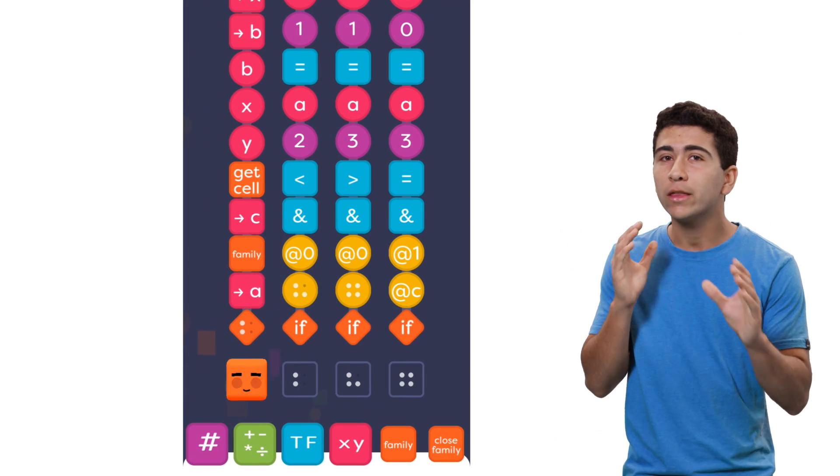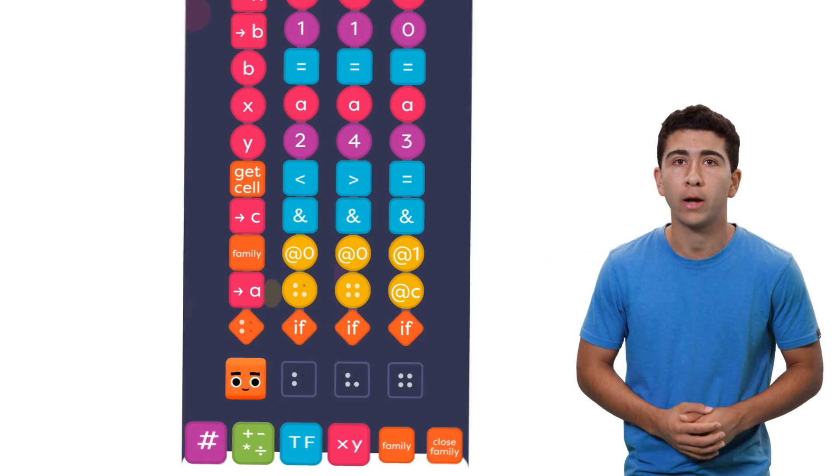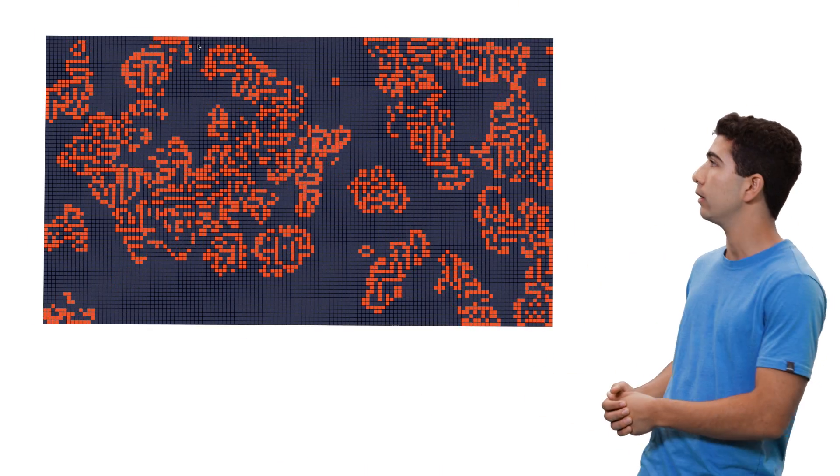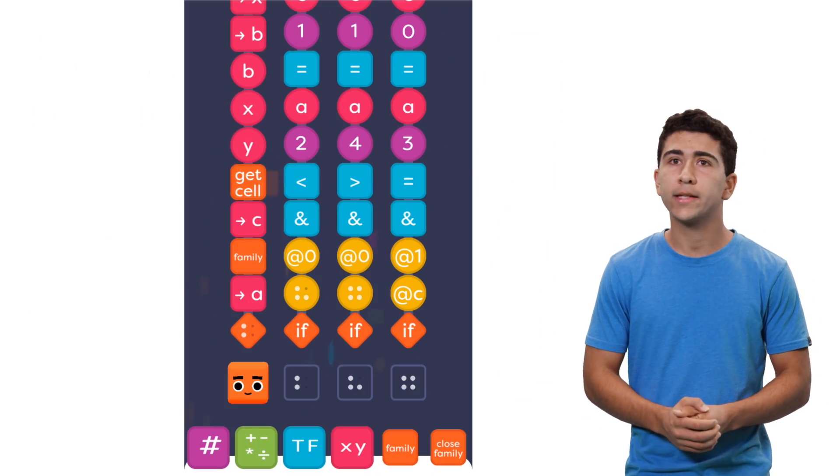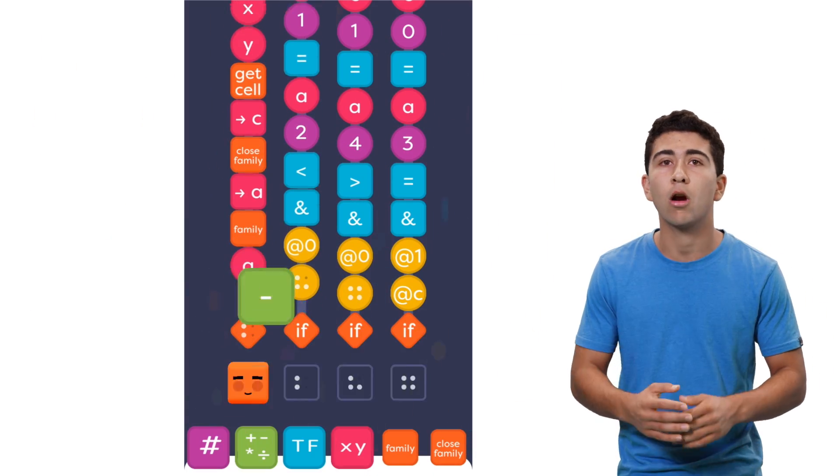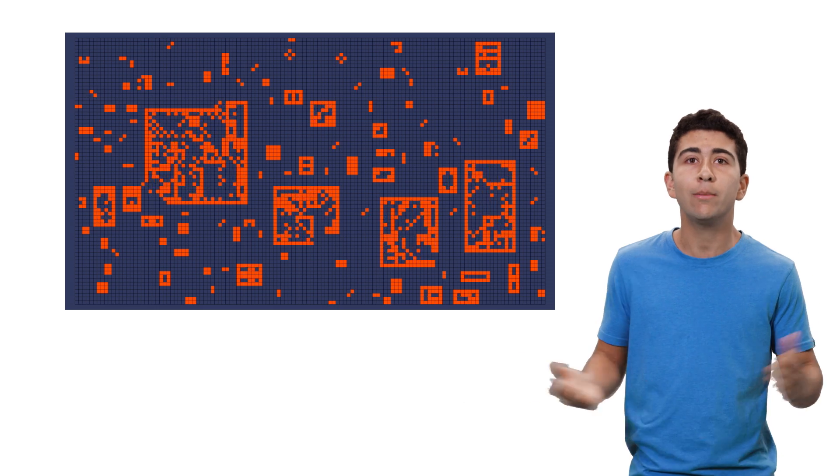So, what happens when we tweak the rules for each cell? Well, we could change one number and make the cells more tolerant to overcrowding. In which case, we get something that looks like a coral reef. Or, we could make the cells sensitive to whether their neighbors are diagonally or directly adjacent. In which case, we get something that looks like a village being built and rebuilt all over again.